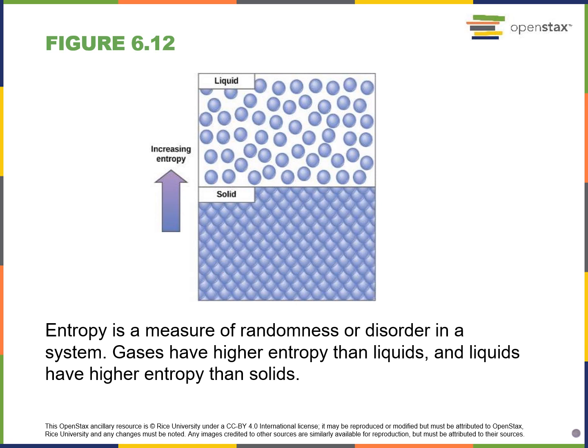Looking at the second law, entropy is the measure of randomness or disorder in a system. For example, with water: gases have a higher entropy than liquids, and liquids have a higher entropy than solids — so solids have the least entropy, then liquids, then gases with the greatest disorder. Our book also tells us that cells and living organisms are very organized and ordered, so it takes a lot of energy input to maintain that order.